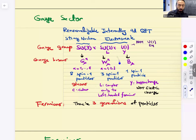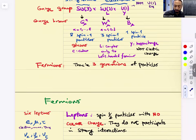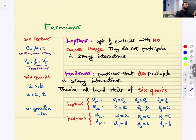L means that this gauge group couples only to left-handed fermions. And why is it hypercharge? Because it's not an electric charge. There are three generations of fermions. We classify particles in two different groups: leptons and hadrons. Leptons are the ones that do not interact through the strong force — they do not have color. Under SU(3), they transform as the trivial representation. Hadrons are everything that talks to the nuclear through the strong force.